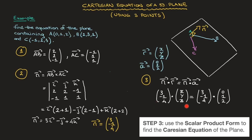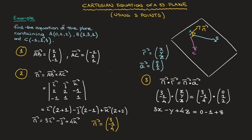The dot product on the left-hand side gives 3 times X plus negative 1 times Y plus 4 times Z, which leads to 3X minus Y plus 4Z. That's equal to the dot product on the right-hand side: 3 times 0 plus negative 1 times 1 plus 4 times 2, so that's 0 minus 1 plus 8. Simplifying the right-hand side, we obtain a Cartesian equation of our plane: 3X minus Y plus 4Z equals 7. We've just found a Cartesian equation of our plane using three points contained in it.